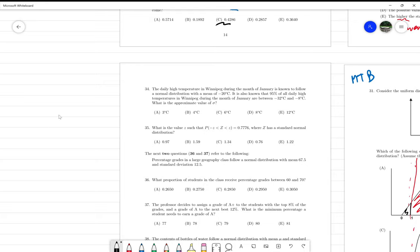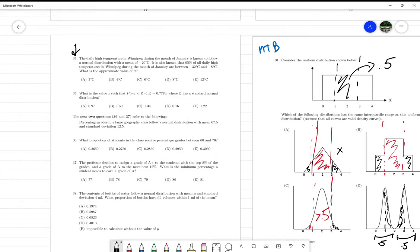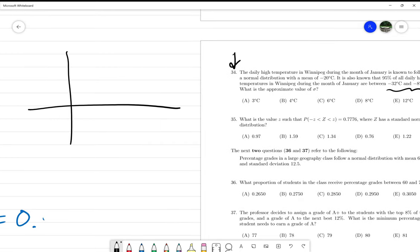Okay, I'll be going over question 34 from sample midterm 8. We are given the following information about Winnipeg temperatures: the mean is -20 degrees, and it is known that 95% of all daily temperatures in Winnipeg are between -32 and -8. What is the approximate value of sigma? Let's draw it out.